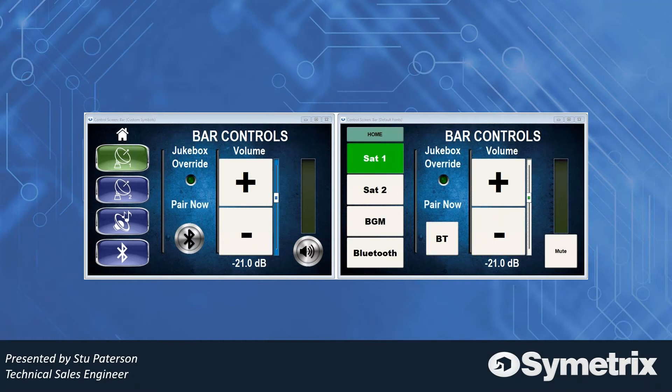You can select either state, so you're importing two images into a button — though you can import just one image if you want. We give you the ability with most buttons to import two images for an on state and an off state. You can also see the pair now button and the mute button, which I changed to different images as well.